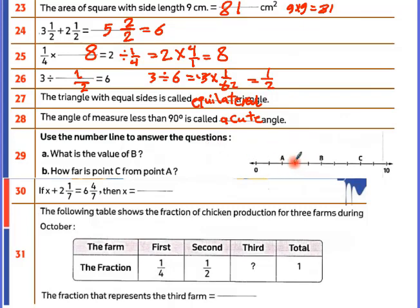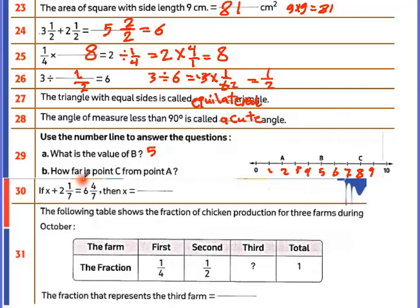Using the number line from 0 to 10: one, two, three, four, five, six, seven, eight, nine, ten. The value of b is 5. How far is point c from point a? C is at 8, a is at 2, so 8 minus 2 equals 6.